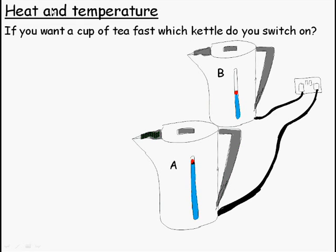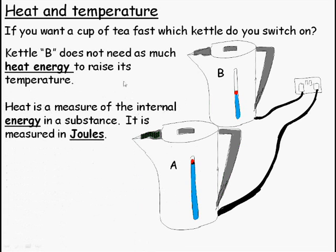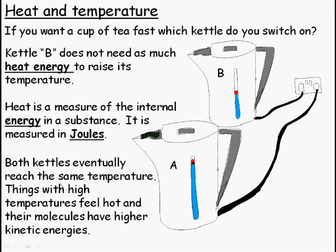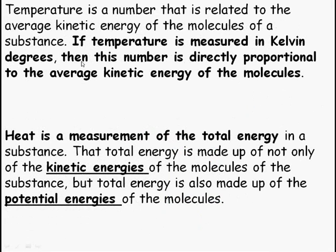Let's first look at the difference between heat and temperature. If you want a cup of tea fast, which kettle do you switch on, the half full one or the full one? It's pretty obvious that the half full kettle, kettle B, will heat up the fastest. It doesn't need as much heat energy to raise its temperature, because it's got less mass in there. Heat energy is a measure of the internal energy in a substance, and it's measured in joules. Both kettles will eventually reach the same temperature. With high temperatures, things feel hot, and their molecules have higher kinetic energies.